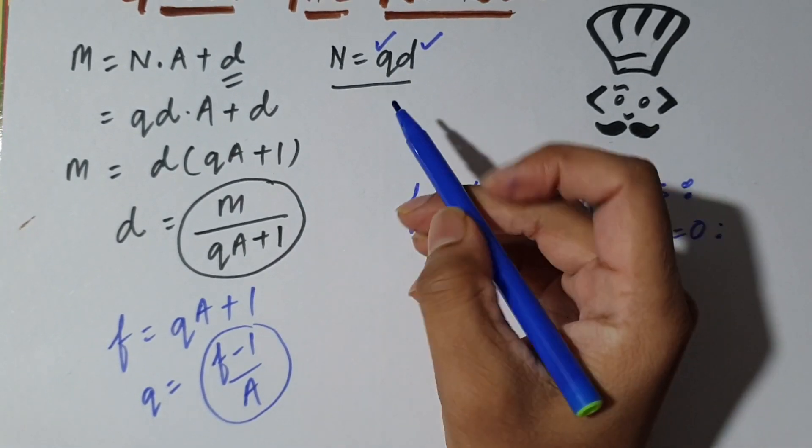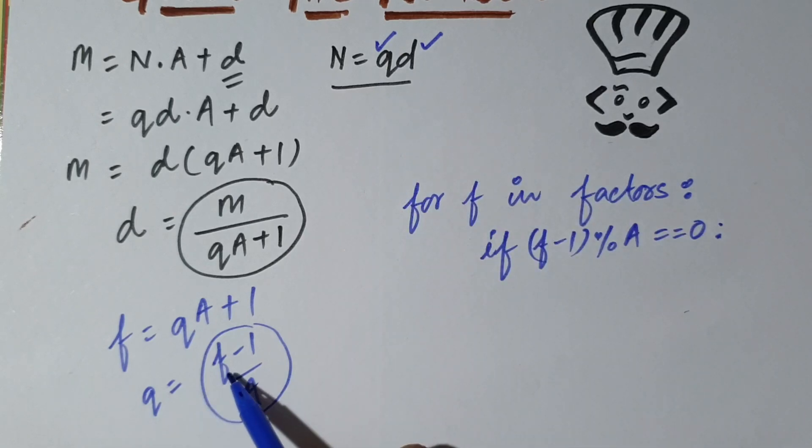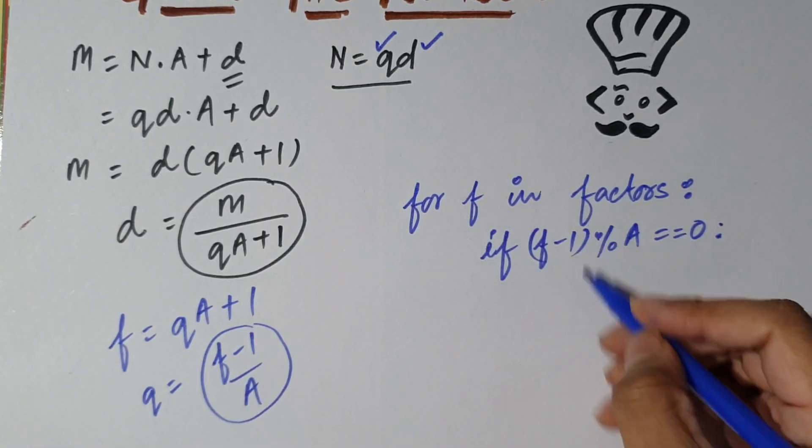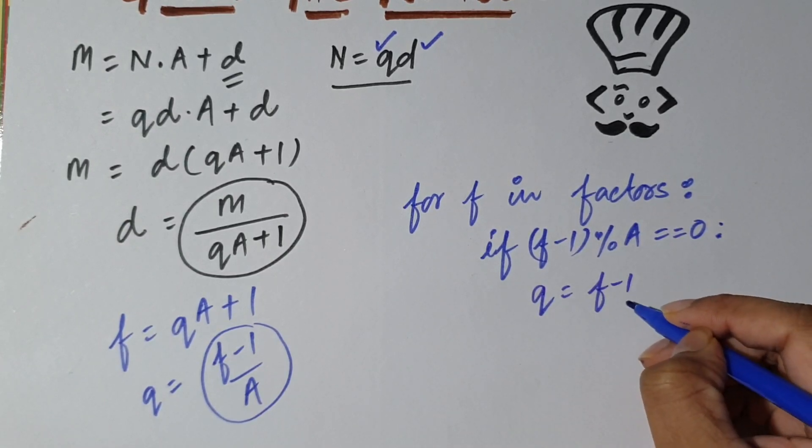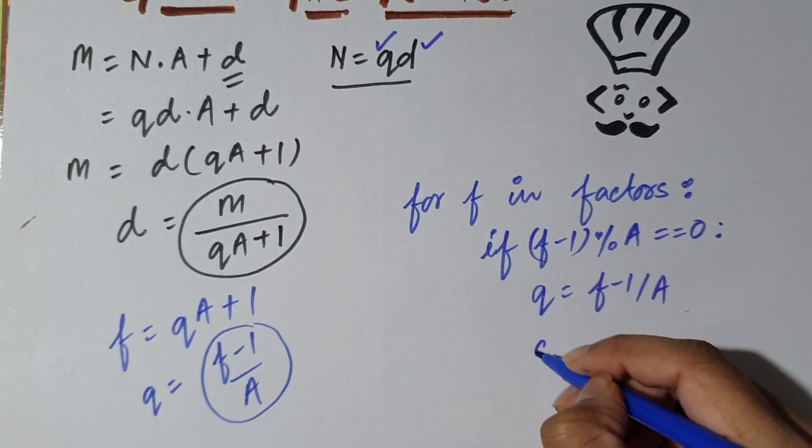So what is Q? Q is F minus 1 by A. So Q is F minus 1 by A.